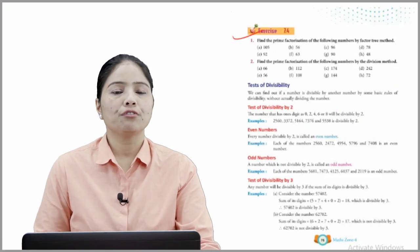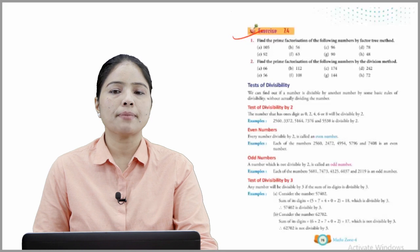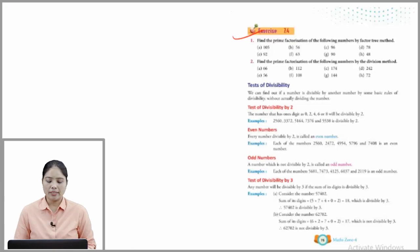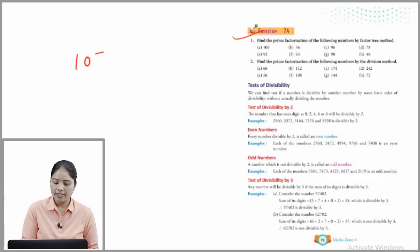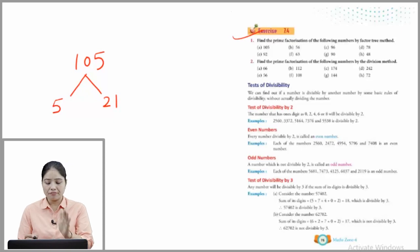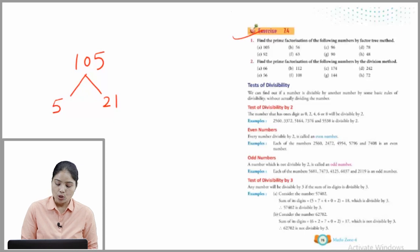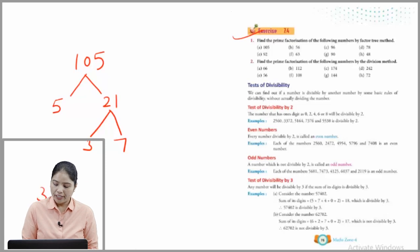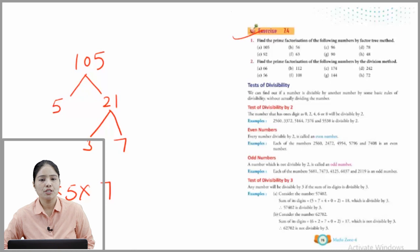Exercise 7.4: Find the prime factorization of the following numbers by the factor tree method. First one is 105. For 105: 105 = 5×21, then 21 = 3×7. So we can say that the prime factorization of 105 is 3×5×7.